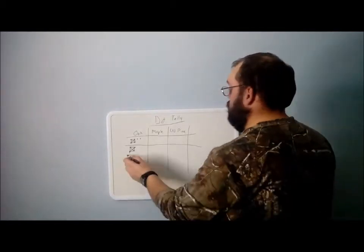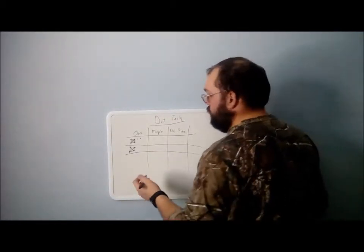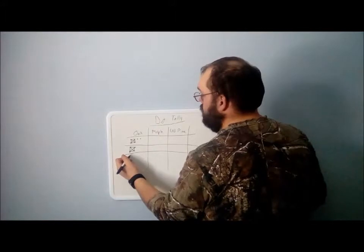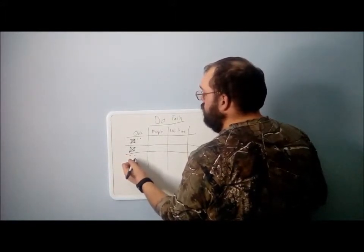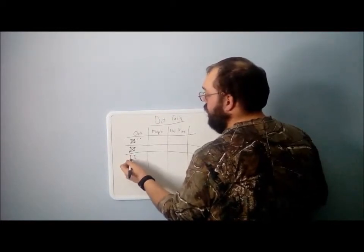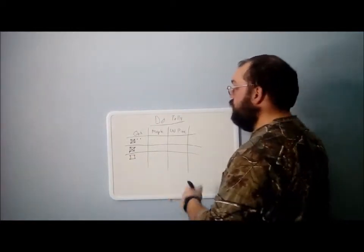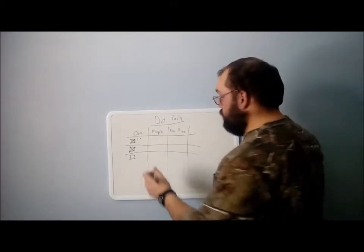So let's say the next plot, we got seven or eight oak trees. One, two, three, four, five, six, seven, eight. Eight oak trees.